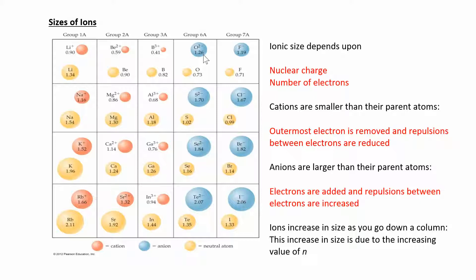The opposite happens with anions. If you gain electrons, the atom is going to get bigger. The more electrons you gain, the bigger it gets. The electrons are fighting each other and spread out. I always think of it like babysitting — when I suddenly have way too many kids, they start fighting and spread out, getting further and further away from me. The electrons are like little clouds of negativity that spread out when you gain electrons.